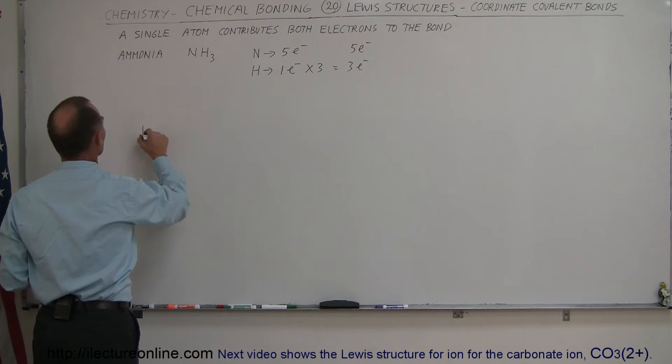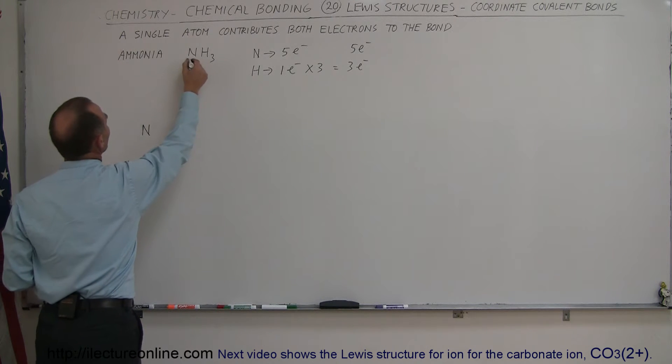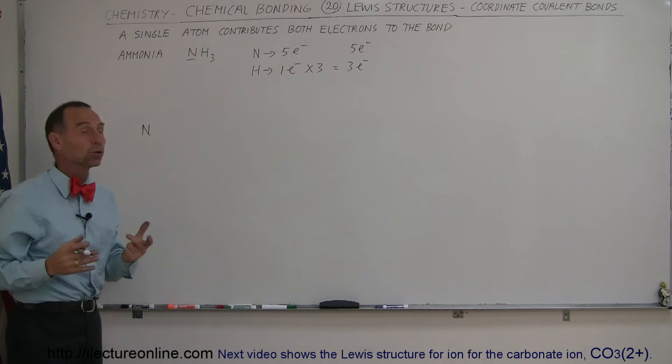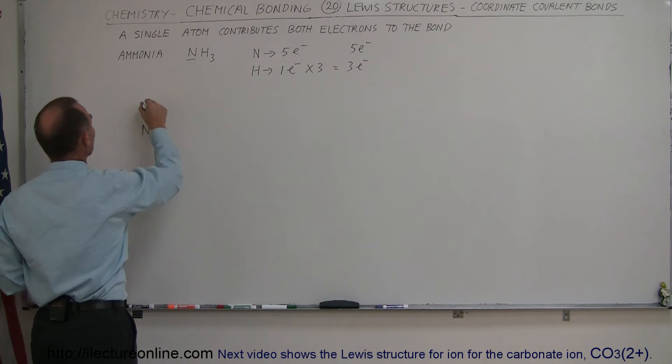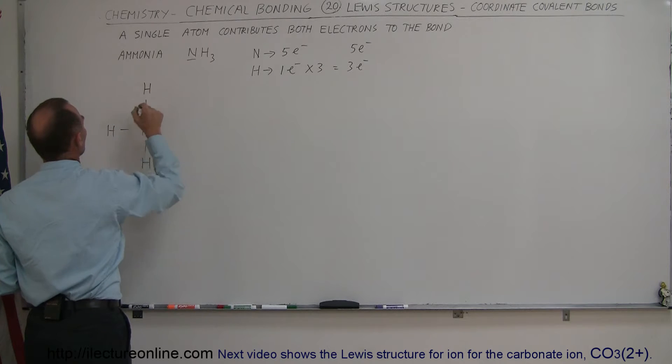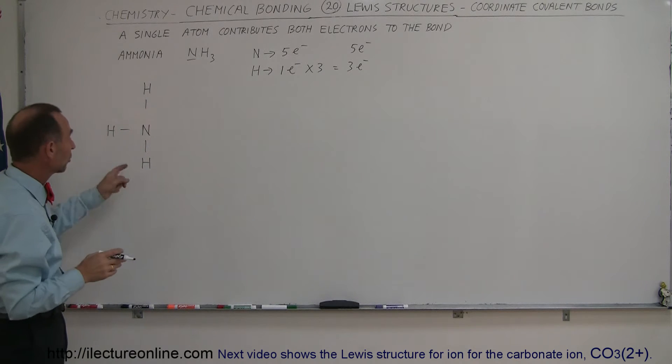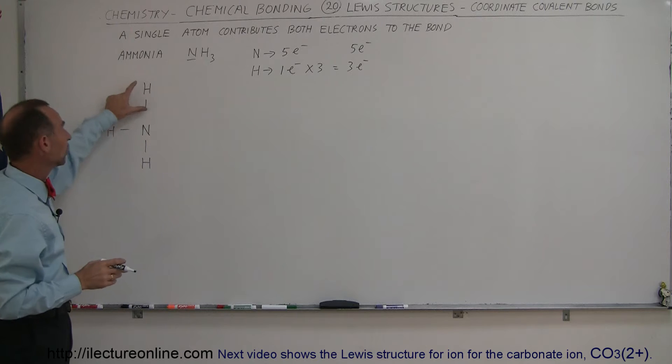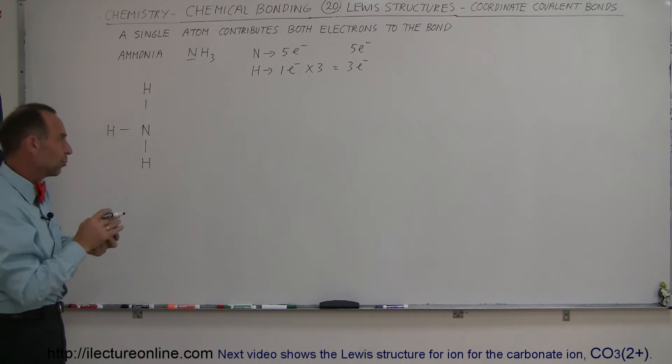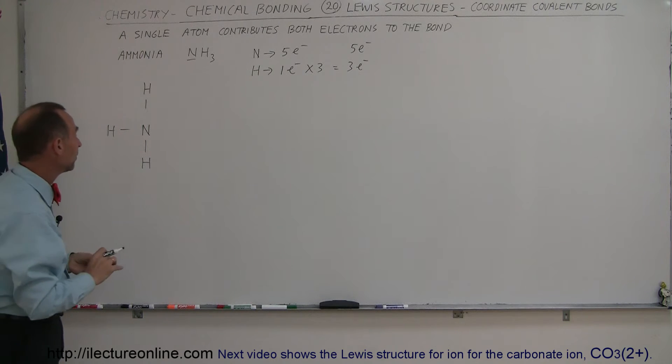So what does that look like? Well, we have a nitrogen in the middle, because obviously it's the only one that can form multiple bonds, and then we'll have a hydrogen in each case like this, making a bond with the hydrogen. Notice that the hydrogens are all satisfied. They now share two electrons with the nitrogen, so they each follow the octet rule for hydrogen, which means only two electrons in each orbit.